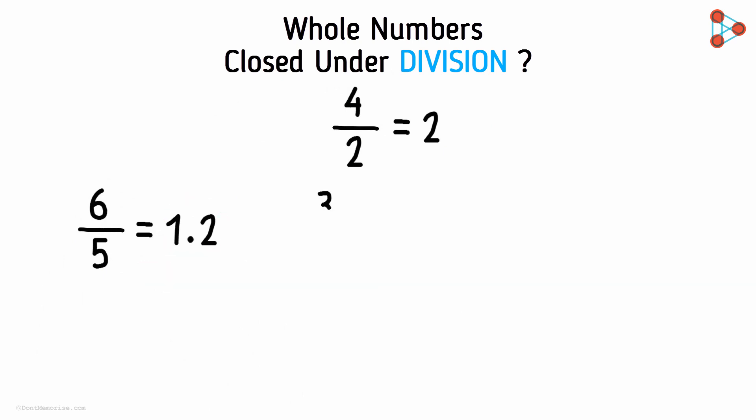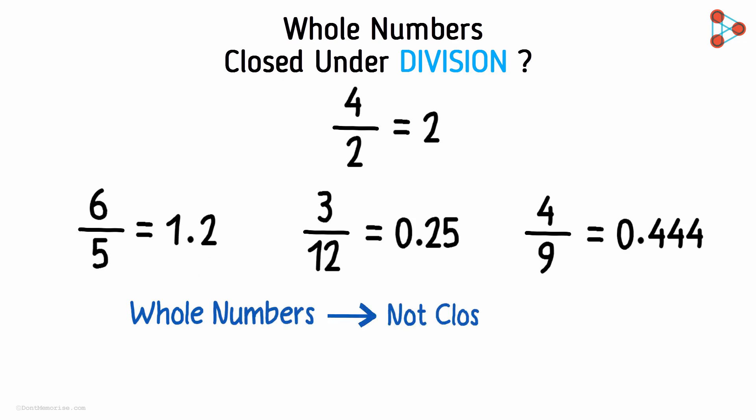Similarly, examples such as 3 divided by 12, 4 divided by 9 will not result in whole numbers. Hence we say that whole numbers are not closed under division.